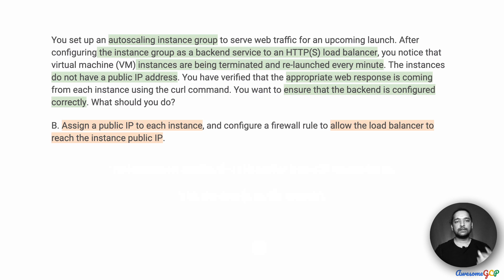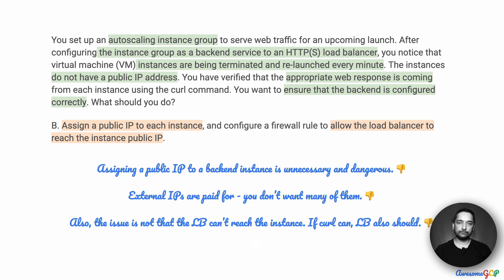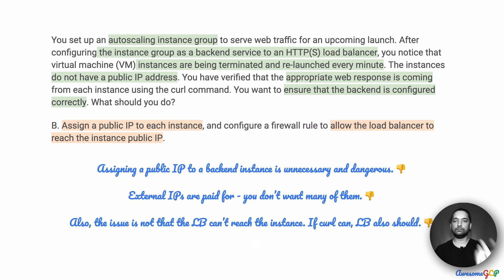Option B suggests assigning a public IP to each instance and configuring a firewall rule to allow the load balancer to reach the instance's public IP. Right off the bat, this is a bad option. We do not want VM instances accessible from the open internet — we want to keep them behind a NAT or load balancer. Assigning a public IP to every backend instance is unnecessary and dangerous. External IPs also cost money; you pay for every external IP allocated. Ideally, you want one public-facing IP and all others as private IPs. Also, if curl can reach the instance, the load balancer should be able to as well.